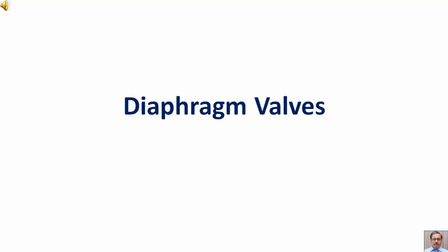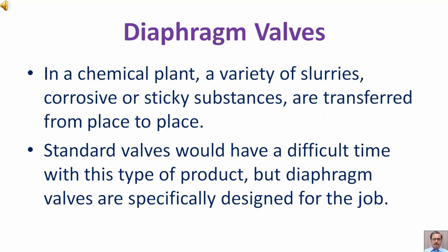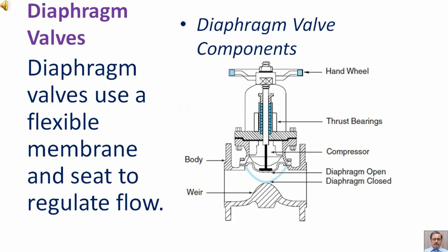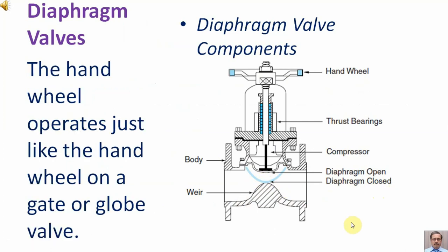In a chemical plant, a variety of slurries, corrosive, or sticky substances are transferred from place to place. Standard valves would have a difficult time with this type of product, but diaphragm valves are specifically designed for the job. Diaphragm valves use a flexible membrane and seat to regulate flow.